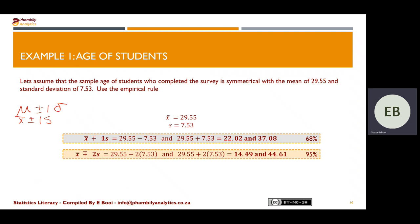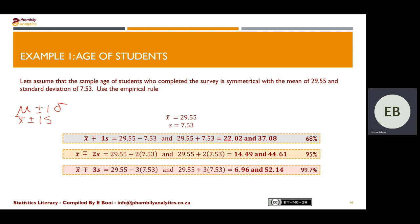For two standard deviations: 29.55 minus two times 7.53 and 29.55 plus two times 7.53, giving us 14.49 and 44.61, which means 95% of the data falls within that range. For three standard deviations: 29.55 minus three times 7.53 and 29.55 plus three times 7.53, giving us 6.96 and 52.14, which represents 99.7% of the data falling within that range.